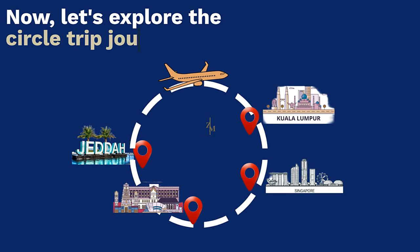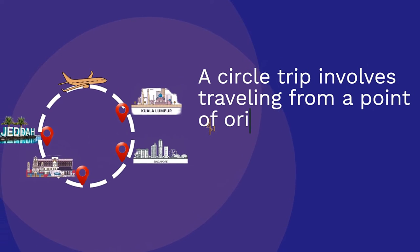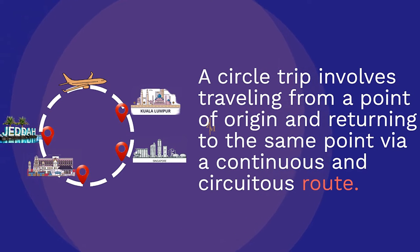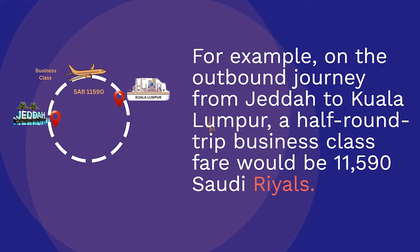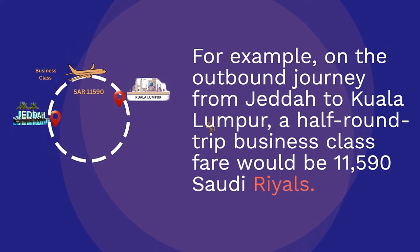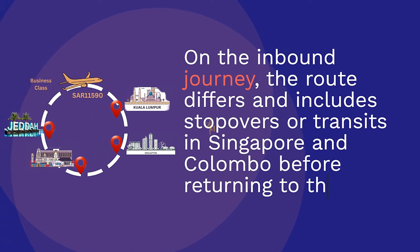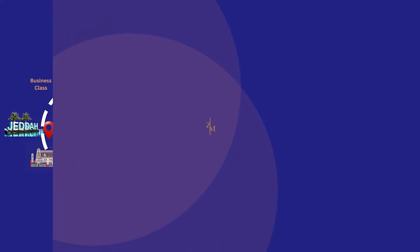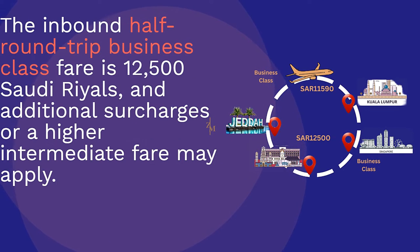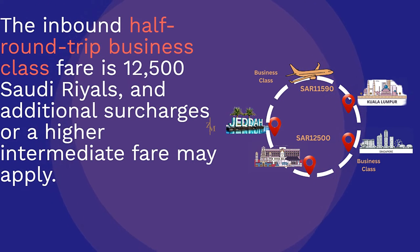Now let's explore the circle-trip journey type. A circle trip involves travelling from a point of origin and returning to the same point via a continuous and circuitous route. For example, on the outbound journey from Jeddah to Kuala Lumpur, a half-round-trip business class fare would be 11,590 Saudi Riyals. On the inbound journey, the route differs and includes stopovers or transits in Singapore and Colombo before returning to the origin in Jeddah. The inbound half-round-trip business class fare is 12,500 Saudi Riyals, and additional surcharges or a higher intermediate fare may apply.